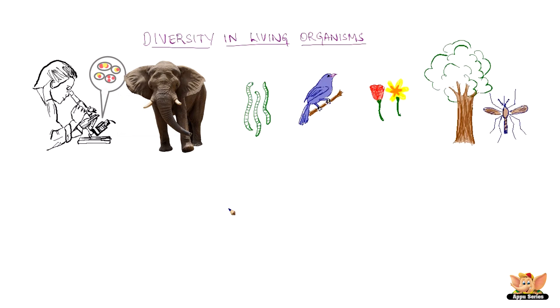As there are lots of organisms, it is difficult to understand each and every organism. So how do we understand them? We try to understand the similarities among organisms and classify based on these characteristics.